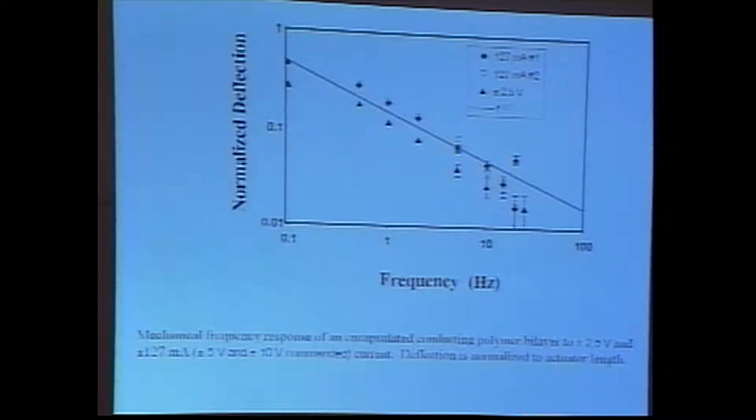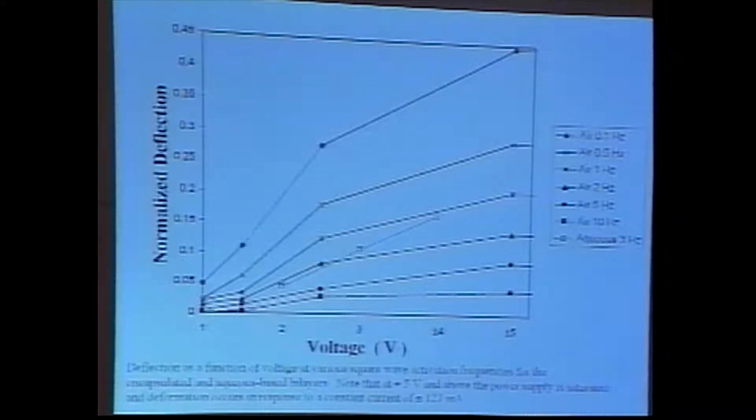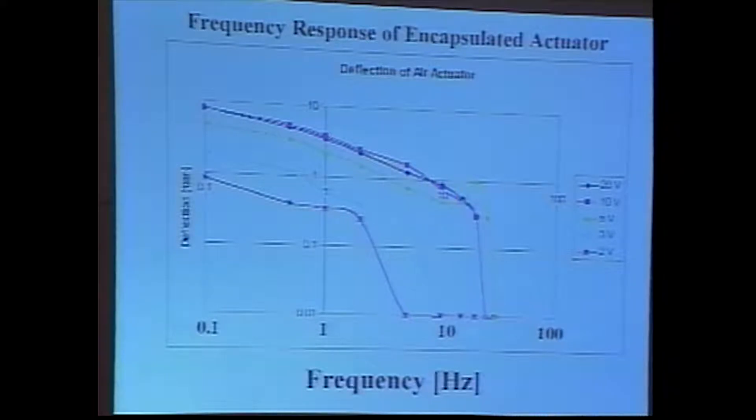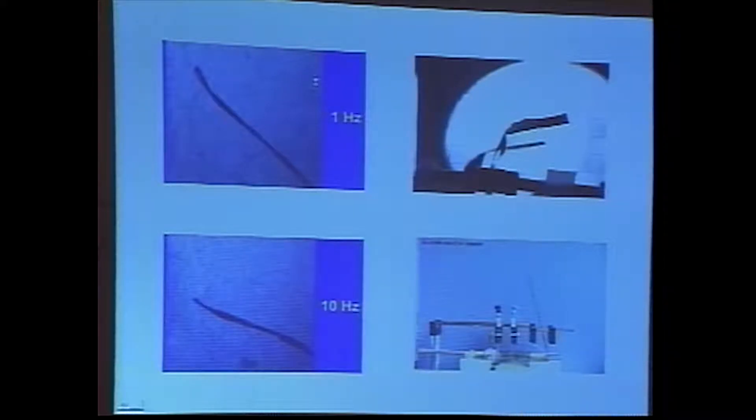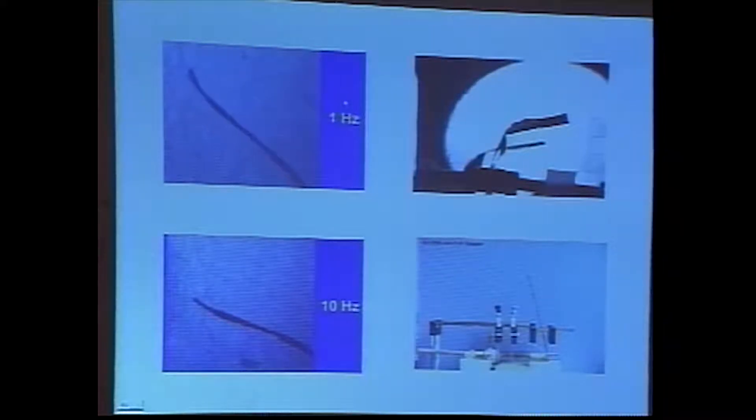Here, we show the multi-layer configuration for the actuators. We're working with a variety of conducting polymer materials. Here's a very interesting one we started to work with, calixarene, which holds the promise of achieving large strains, much larger than we're achieving at the moment. So far, we've been working to push the active strains, the contractions achieved by these materials up, as well as their bandwidth.